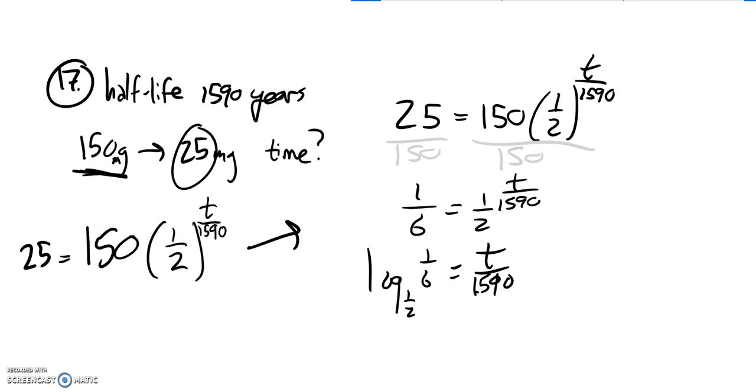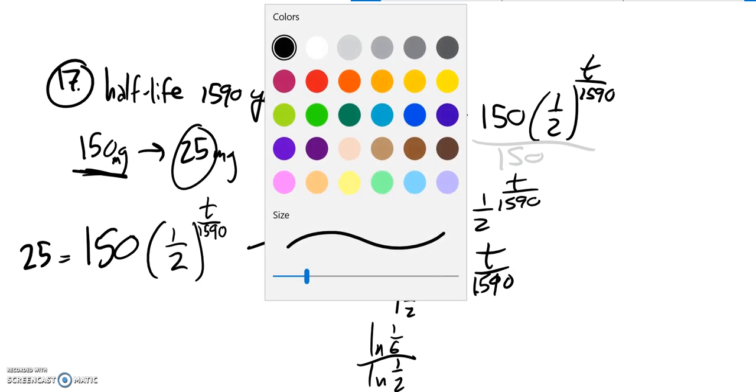From here I can get at this number using change of base formula, like natural log of one-sixth divided by natural log of one-half, multiply by that 1590.